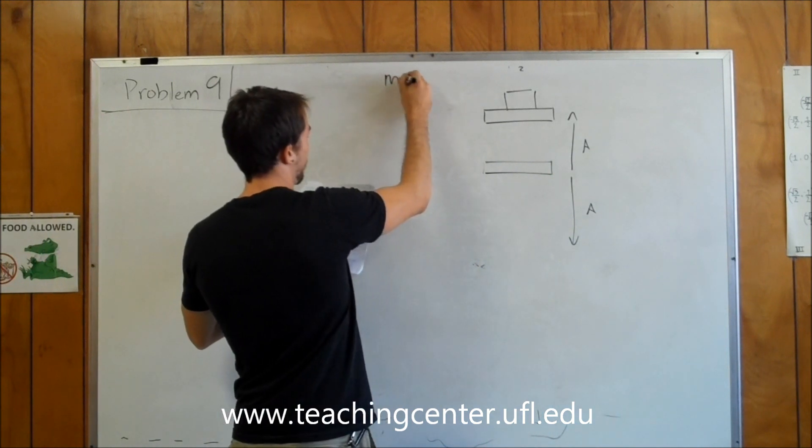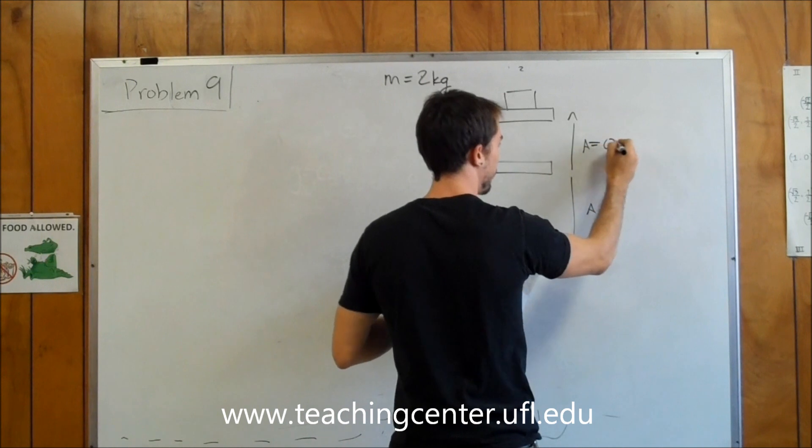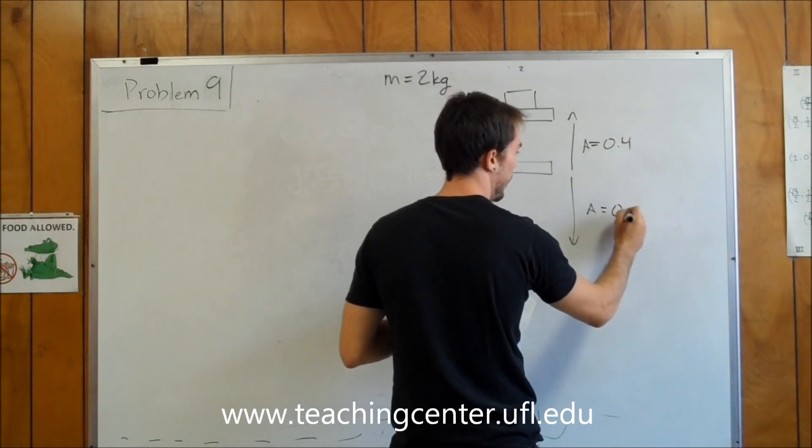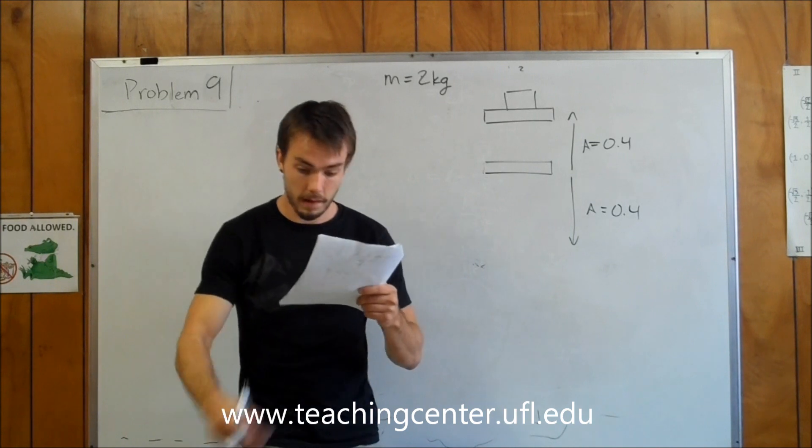Now, they tell us the block has a mass equal to 2 kilograms. We have an amplitude equal to 0.4. That's going to occur both ways. And that's all they give us.